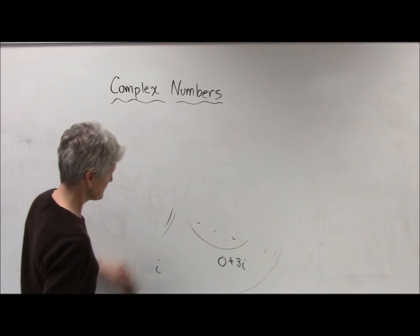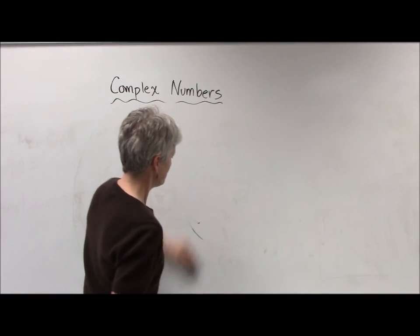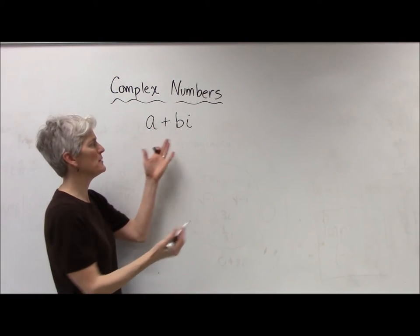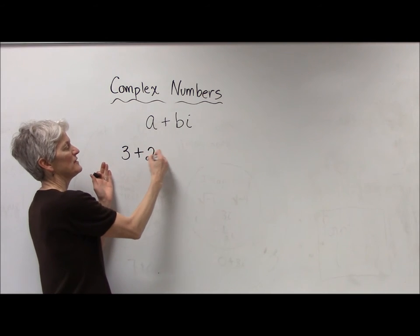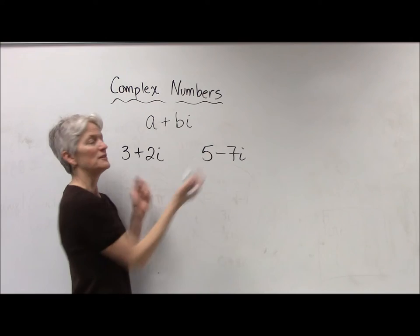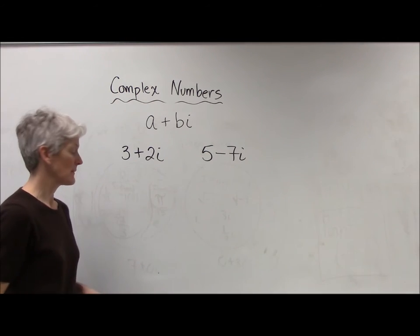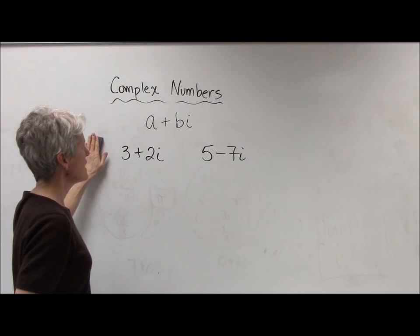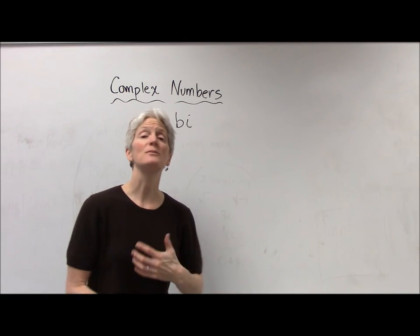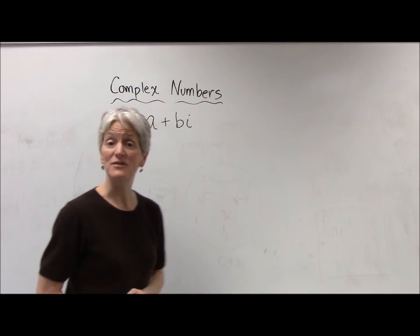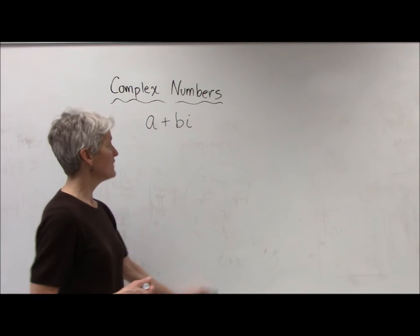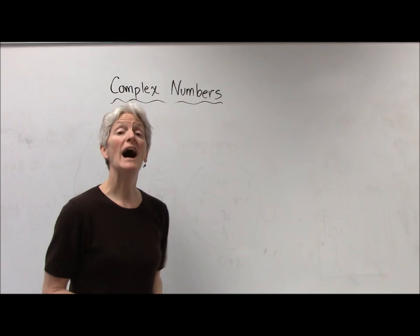Basically complex numbers in the form a plus bi. Now we often say a plus bi, but of course that doesn't always have to be an addition sign. You can have a subtraction as well. So when I have these complex numbers, I can do operations with them. I can add them. I can subtract. I can multiply. I can divide. But before we do all of that stuff, we kind of have to understand a little more about how i works.